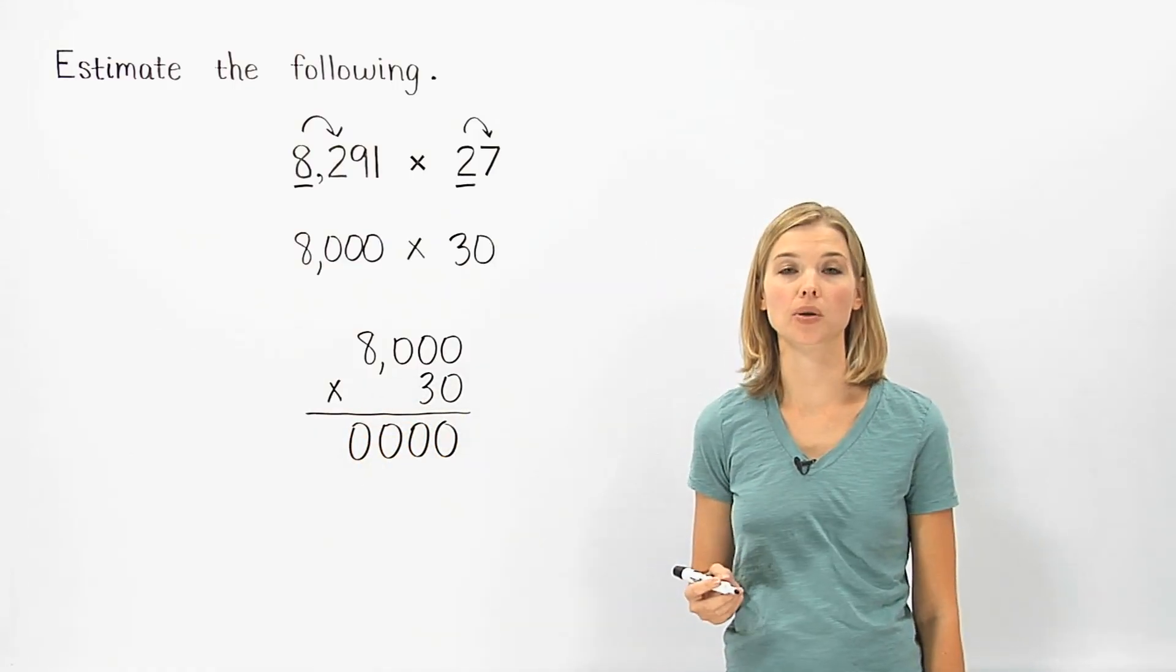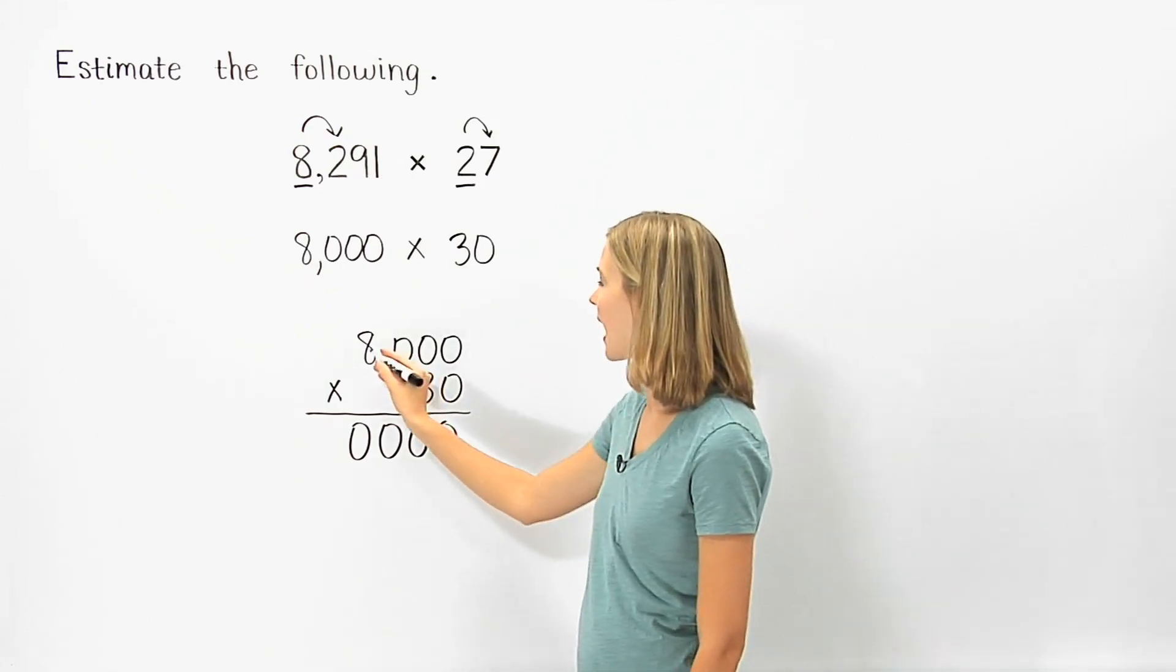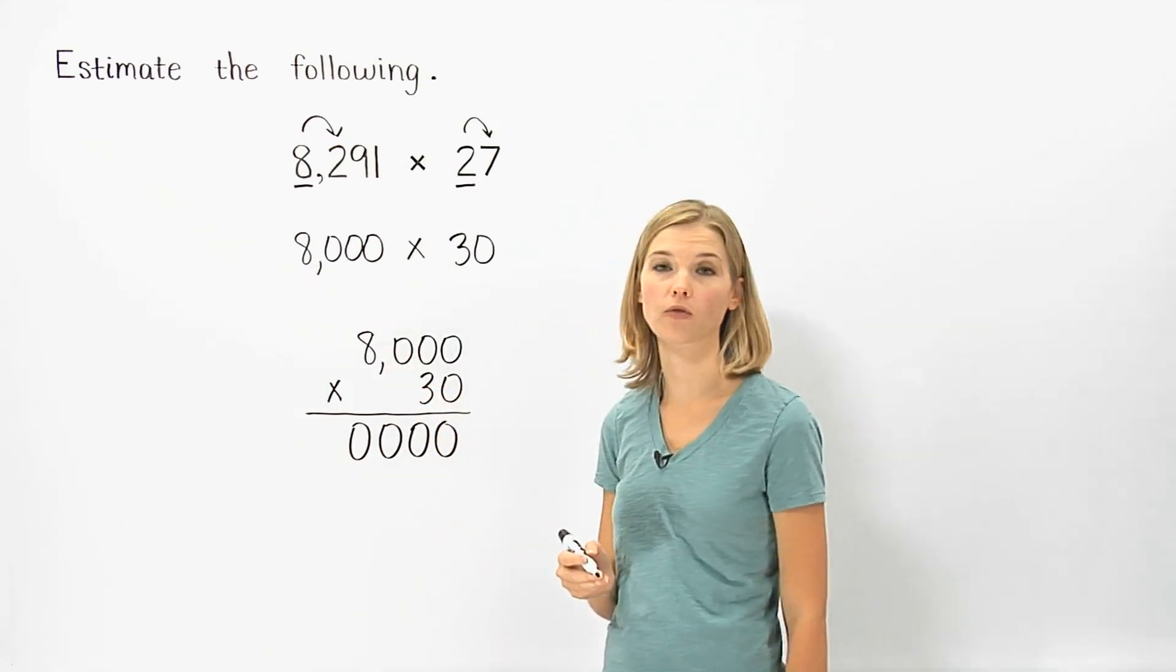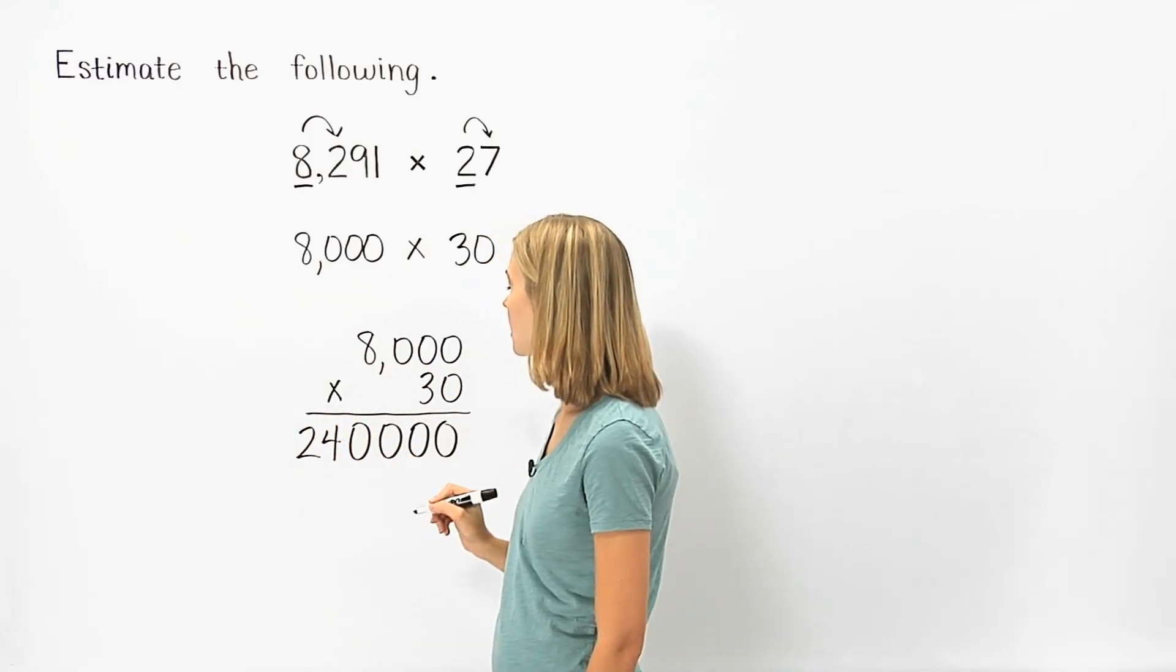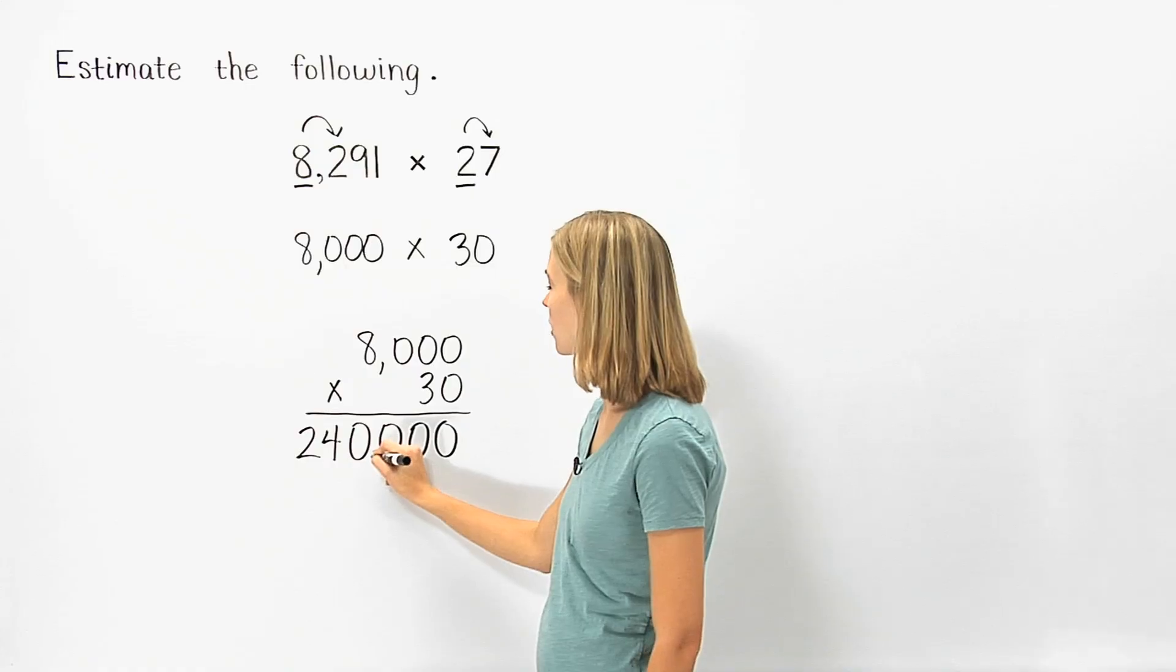Next, we multiply the non-zero digits. In this case, that's 8 times 3, which is 24. So we put 24 in front of the four zeros in our answer, and we have 240,000.